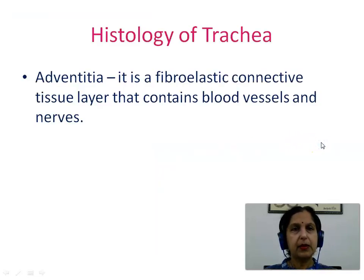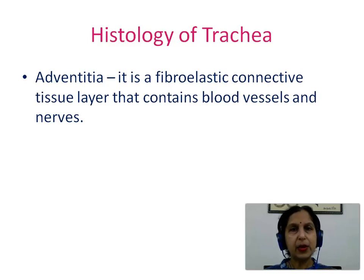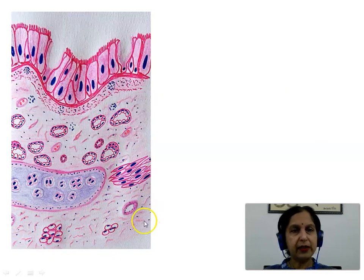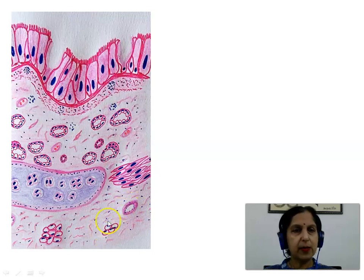We next see the adventitia. This is the fibroelastic connective tissue layer that contains blood vessels and nerves. It is the outermost layer of the trachea. Here we see the adventitia made up of fibroelastic tissue showing blood vessels, adipose cells, fibers, and nerve endings.